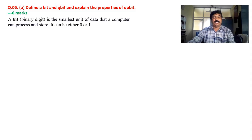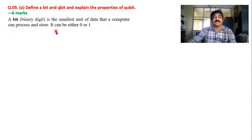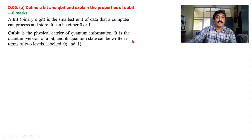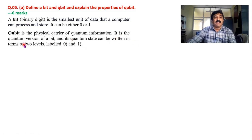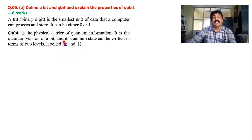A bit is the smallest unit of data that a computer can process and store. It can be represented either by zero or by one. Whereas a qubit is a physical carrier of quantum information — it is a quantum version of a bit, and its quantum state can be written as ket zero and ket one. These are called Dirac notations.